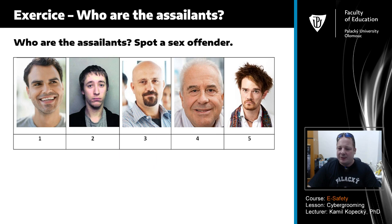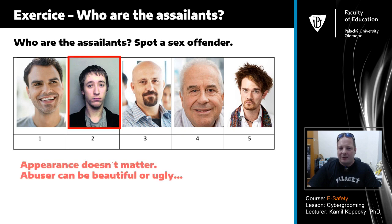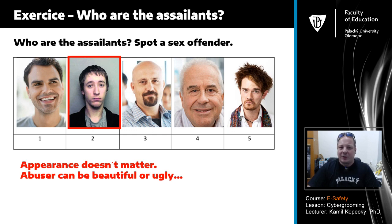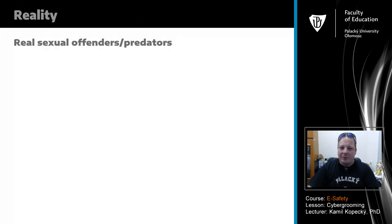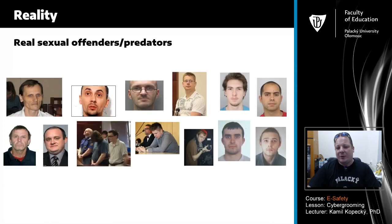Looking at the screen we see numbers one, two, three, four, and five. The real offender is number two. This exercise is focused on the understanding that appearance doesn't matter. An abuser can be beautiful or ugly, so if we look at profiles on social networks, for example Facebook, it doesn't depend on the face who the person really is.